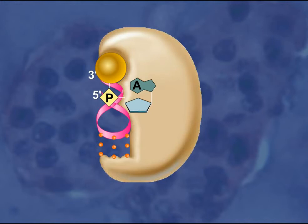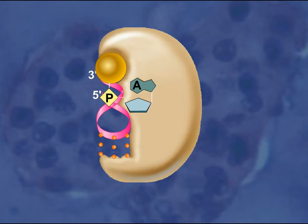The RNA sequence in the anticodon region, as well as other parts of the tRNA molecule, such as the acceptor stem, are important for recognition between the tRNA and the aminoacyl-tRNA synthetase. The bond is broken between the amino acid and AMP.